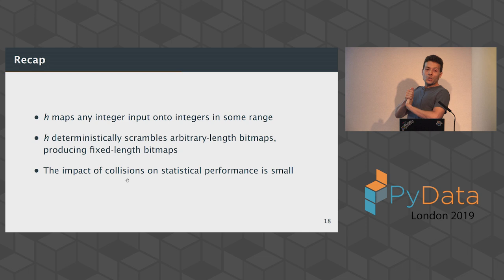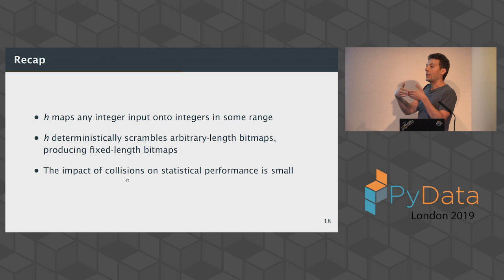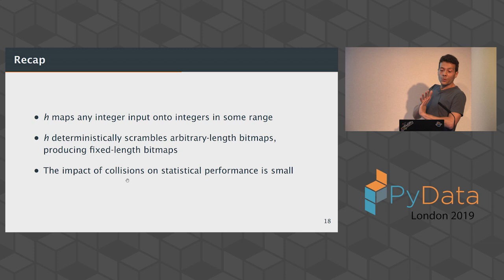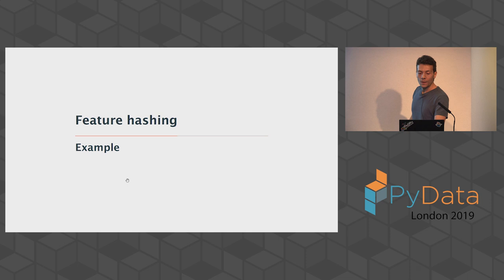You can think of H in two ways. Mathematically, it maps any integer input onto another integer in some fixed range — 32 bits or 64 bits. Or thinking as a computer scientist: H looks at the bits, scrambles them in a deterministic and reproducible fashion, and produces a fixed-length bitmap — going from a potentially very long piece of text down to an integer between zero and 127. The impact of collisions is not too large; we've tested this with customer data and see similar results to published research — you can go up to two or three collisions per bucket and that seems to be fine.